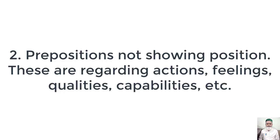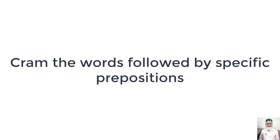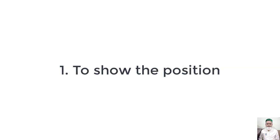Actions, qualities، یا capabilities وغیرہ کے بارے میں ہوتا ہے۔ یہ جو دوسری قسم کا استعمال ہے prepositions کا، اس کے لیے ہمیں cramming کرنی پڑتی ہے — رٹہ لگانا بہت ضروری ہے۔ Position کے لیے ہم سوچ سمجھ کر prepositions کا correct use کر سکتے ہیں، لیکن دوسری قسم کے لیے بہت سے الفاظ اور ان کے ساتھ مخصوص prepositions کو زبانی یاد کرنا پڑتا ہے۔